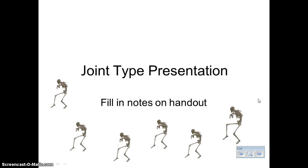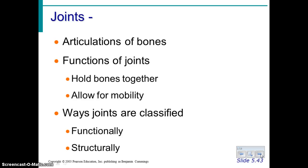Today's presentation is on the different types of joints that you find in the human body. A fancy name for joint is an articulation. A joint is simply where two bones come together. Joints have a couple of functions: to hold bones together, which is most important, and to allow for mobility.